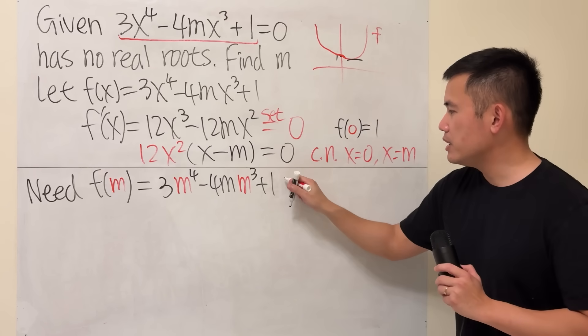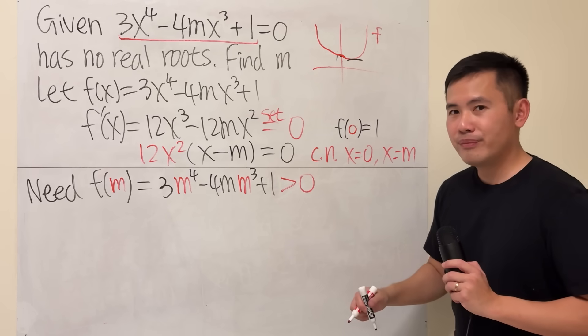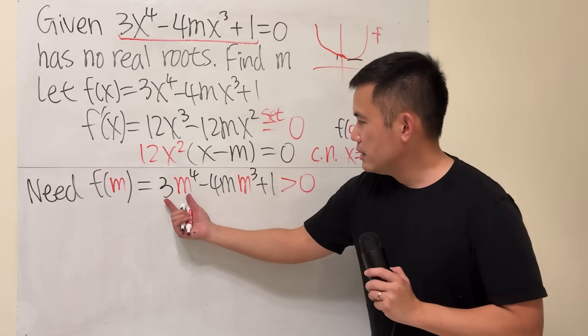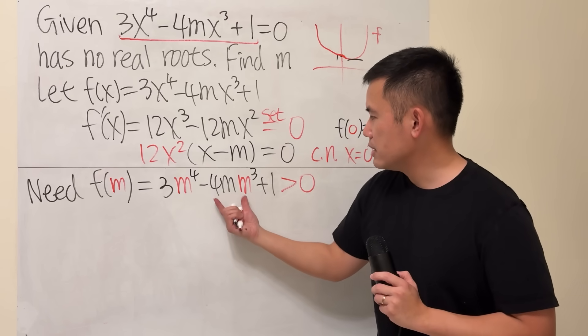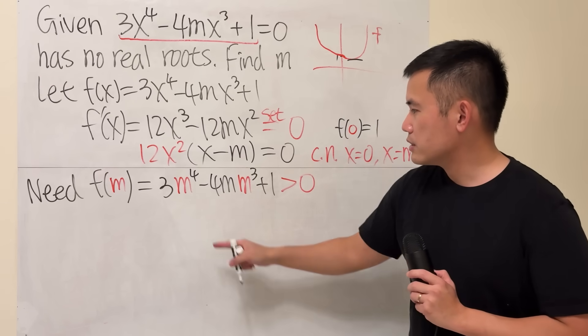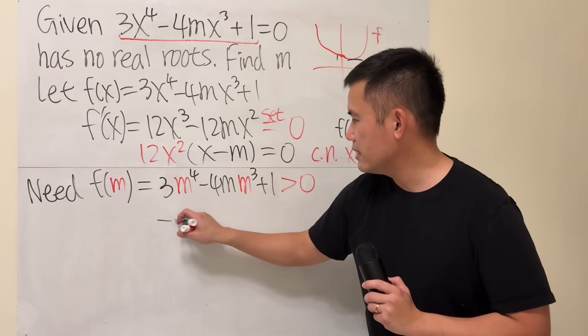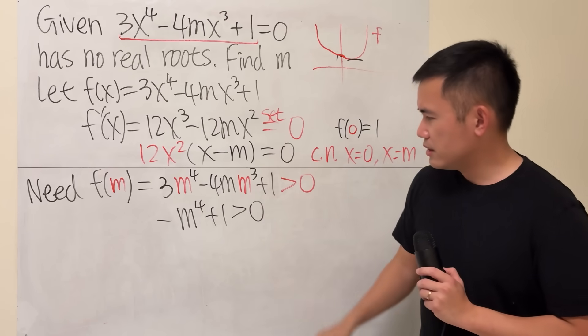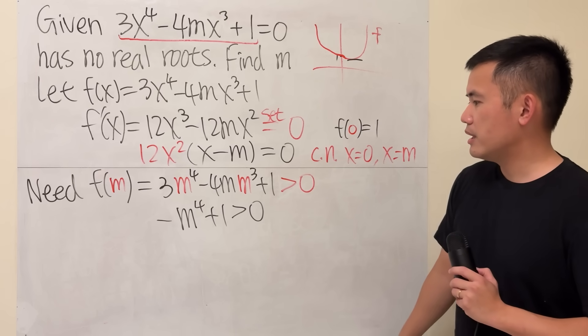f of m is 3m to the fourth power minus 4m times m cubed plus 1. We need this to be greater than 0. This is 3m to the fourth and this is minus 4m to the fourth, so all in all this is minus m to the fourth plus 1 is greater than 0.